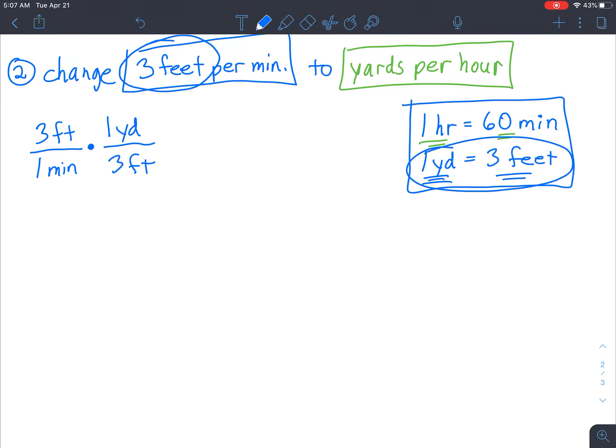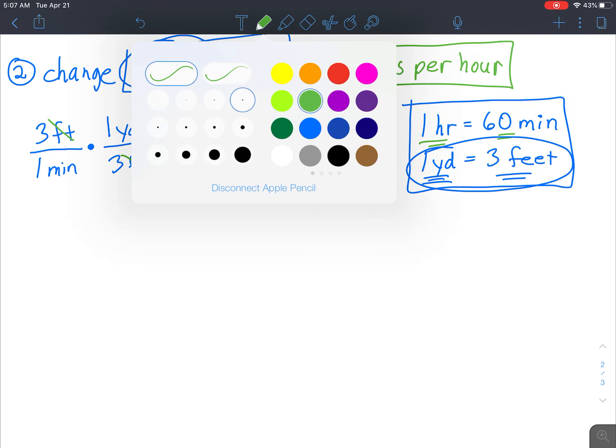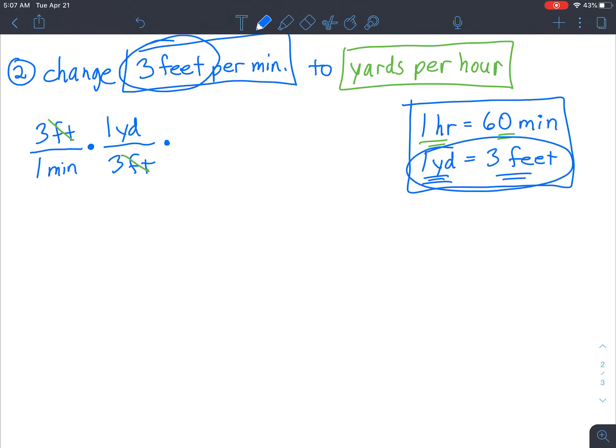I'm going to start right here with the yards per 3 feet. So feet has to match up with feet diagonally. Looks good. And there's 1 yard for every 3 feet. And now we're going to look at the minutes because these have crossed off successfully. And now we're going to put 60 minutes equal to 1 hour. And let's just double check. This crosses off. Minutes, minutes.